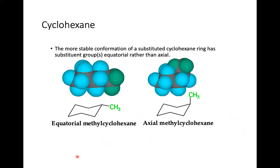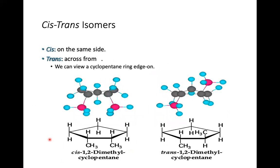The ball-and-stick model shows all 12 hydrogens. The equatorial and axial C-H bonds differ only in the position of their hydrogens, and there is always an axis at the center of the ring. The more stable conformation of a substituted cyclohexane ring has substituent groups in the equatorial position rather than axial — this is equatorial methylcyclohexane, and this is axial methylcyclohexane.